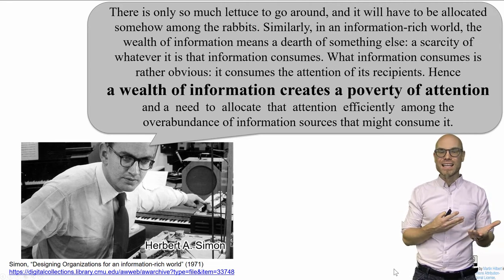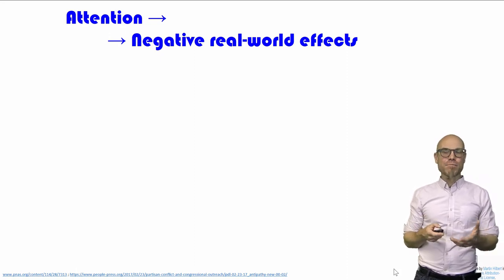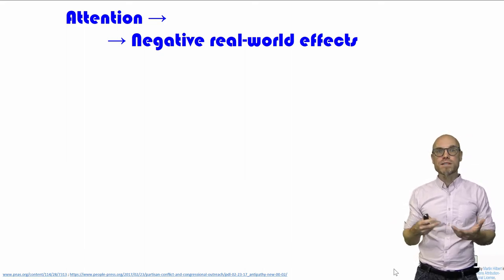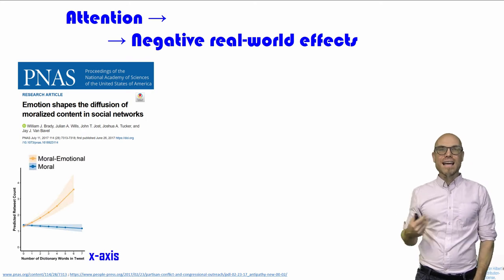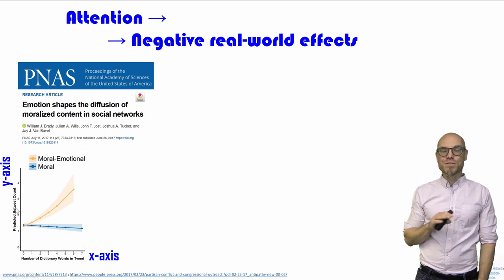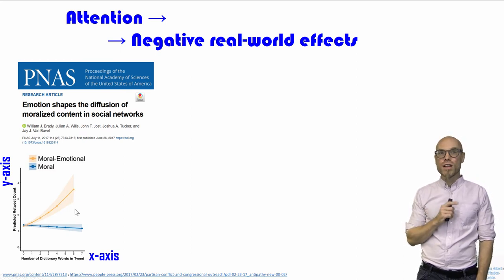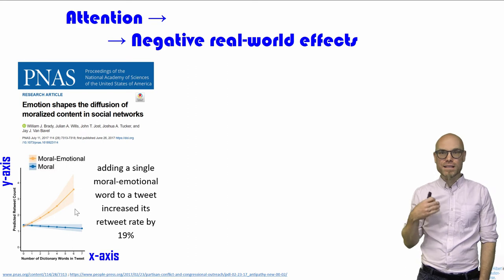Now, in the last decade, the digital paradigm got a lot of bad rap. While previously we were very excited, now it got a lot of bad rap. So let's look at an example of how the competition for attention can lead to negative real-world effects. For example, in this study, they show that emotion shapes the diffusion of moralized content in social networks. On the horizontal x-axis, I have the number of moral or moral-emotional words detected, and on the vertical y-axis, the number of retweets. Moral words stays pretty much the same, but if there are more emotional words, the retweet rate goes up. By adding a single moral-emotional word to a tweet, retweets increased by 19%.